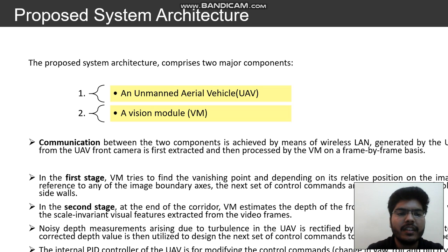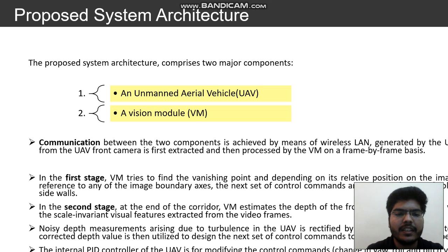ROS, or Robot Operating System, is a customized operating system made for robotic applications. The first stage involves finding the vanishing point, and the second stage involves estimating the depth of obstacles that come in front of the UAV. These will be discussed in detail in the upcoming slides.